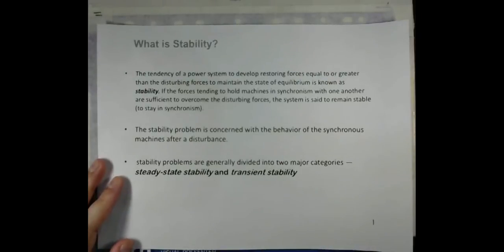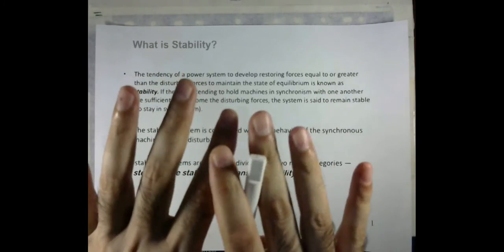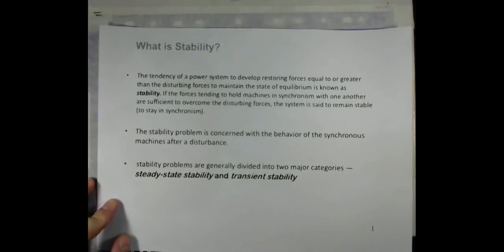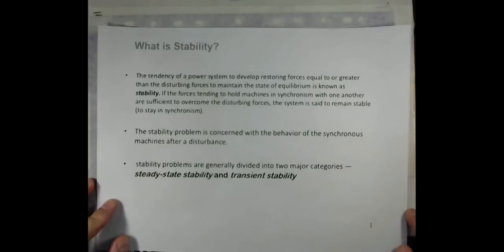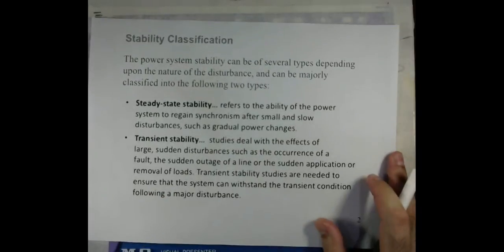The stability problem is concerned with the behavior of synchronous machines after a disturbance, since a fault is a type of disturbance. Stability problems are generally divided into two major categories: steady state stability and transient stability.